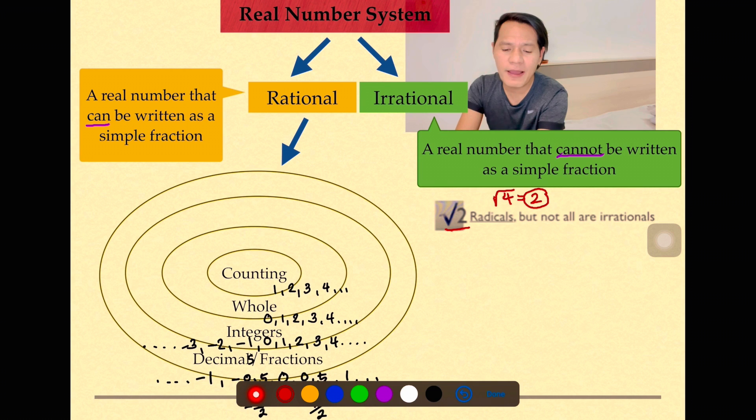The next one here, we have the pi value. Where did you encounter this? In a circle. So we have pi. We will not be discussing this further, but this is one example of the irrational numbers.